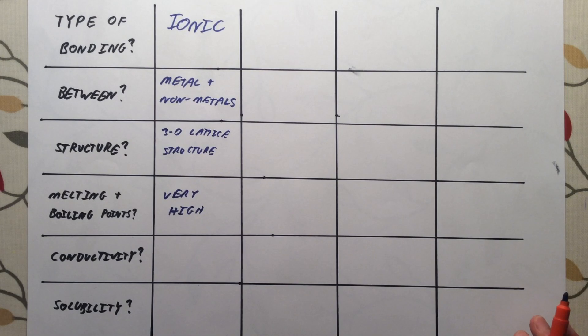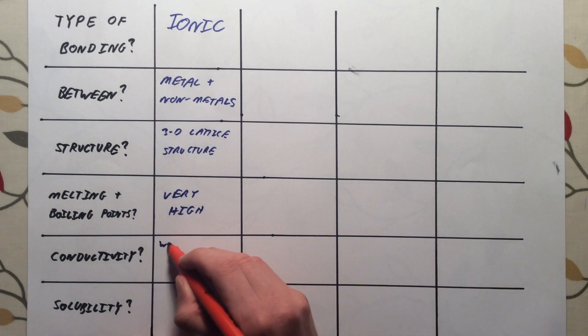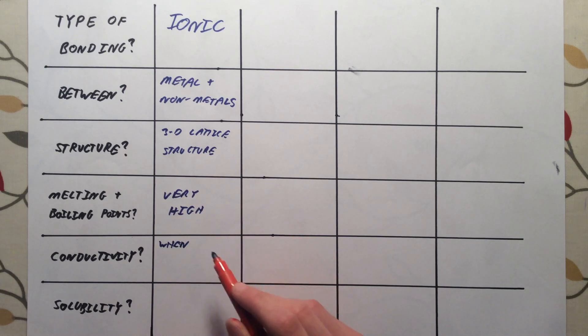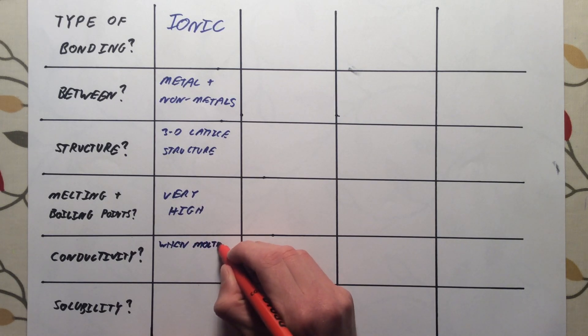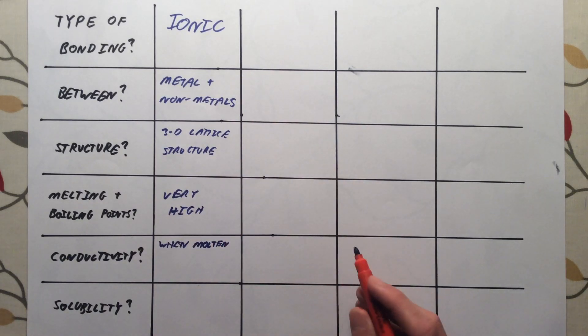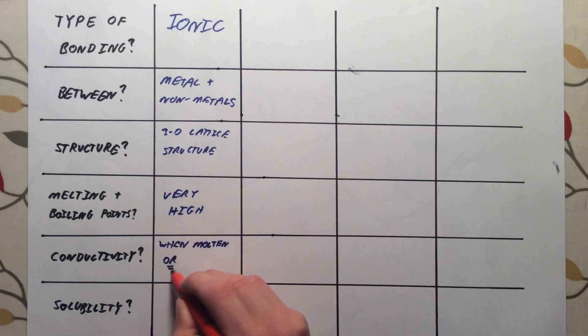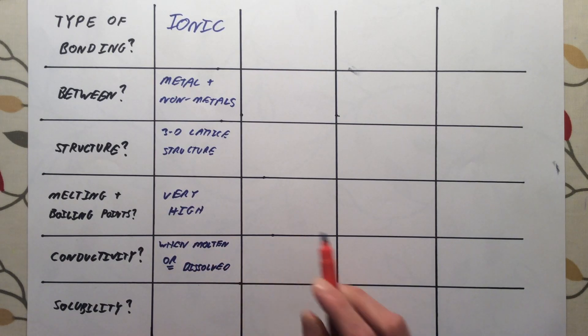In terms of conductivity, ionic compounds only conduct electricity when you overcome and break those strong ionic bonds. To do that, you either have to melt, or make molten, the ionic compound, or you can also dissolve it. So ionic compounds only conduct electricity when molten or dissolved.